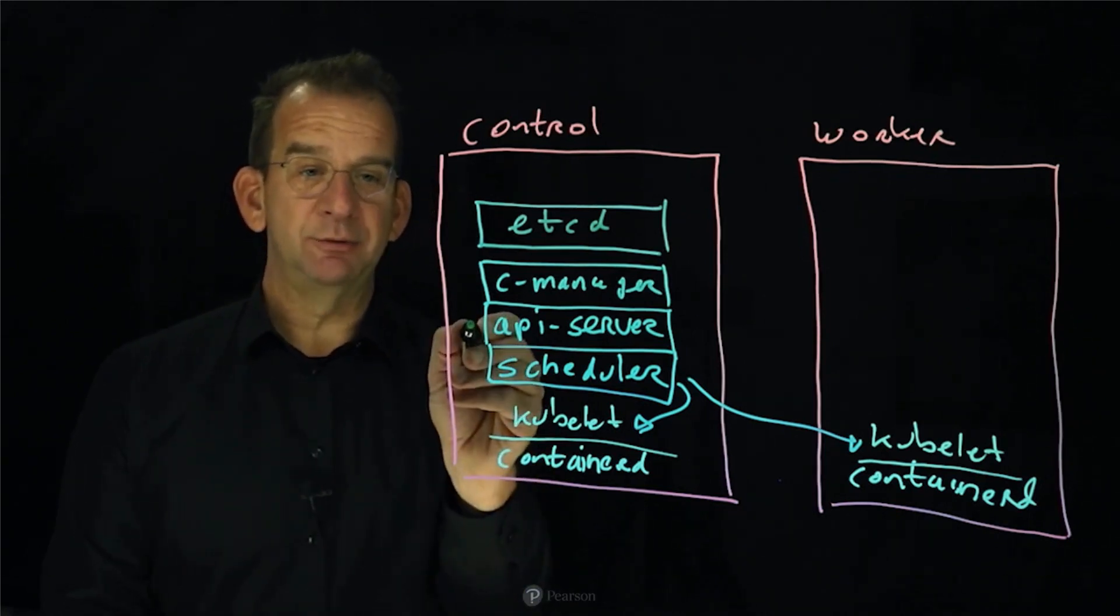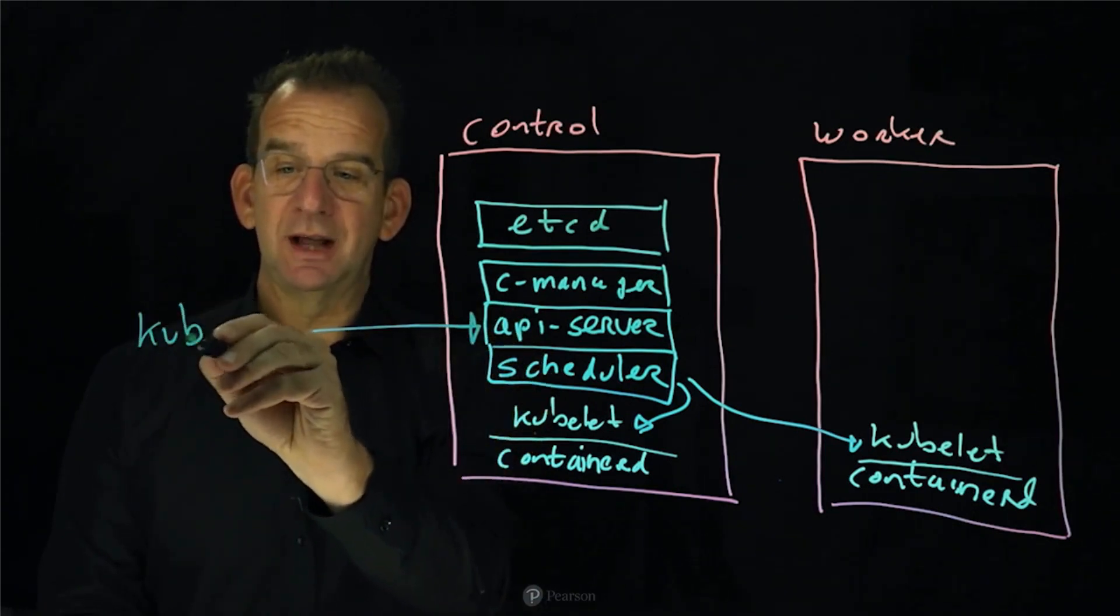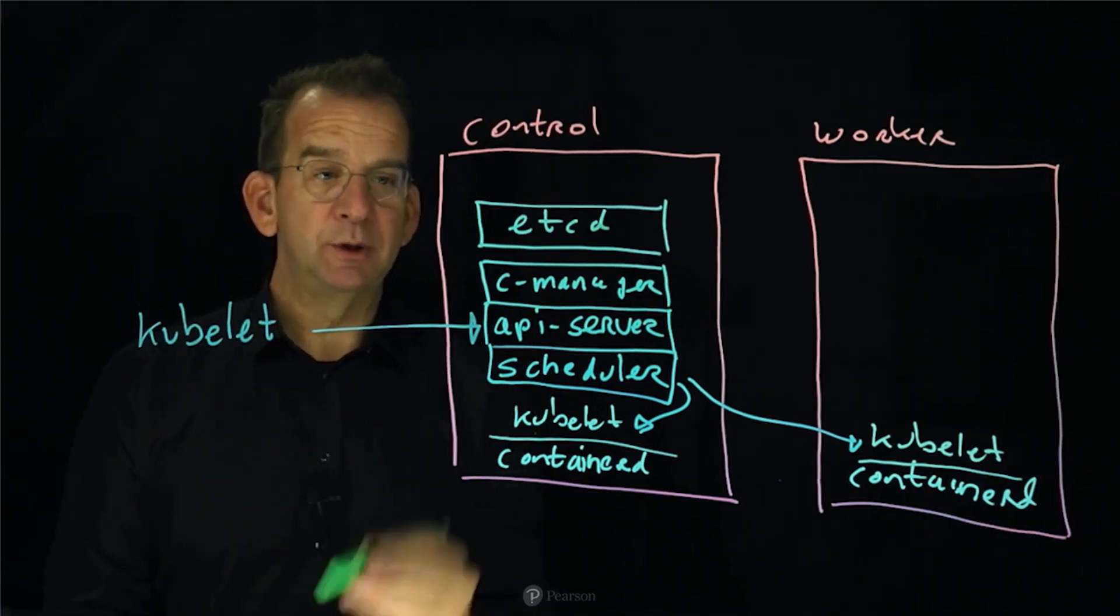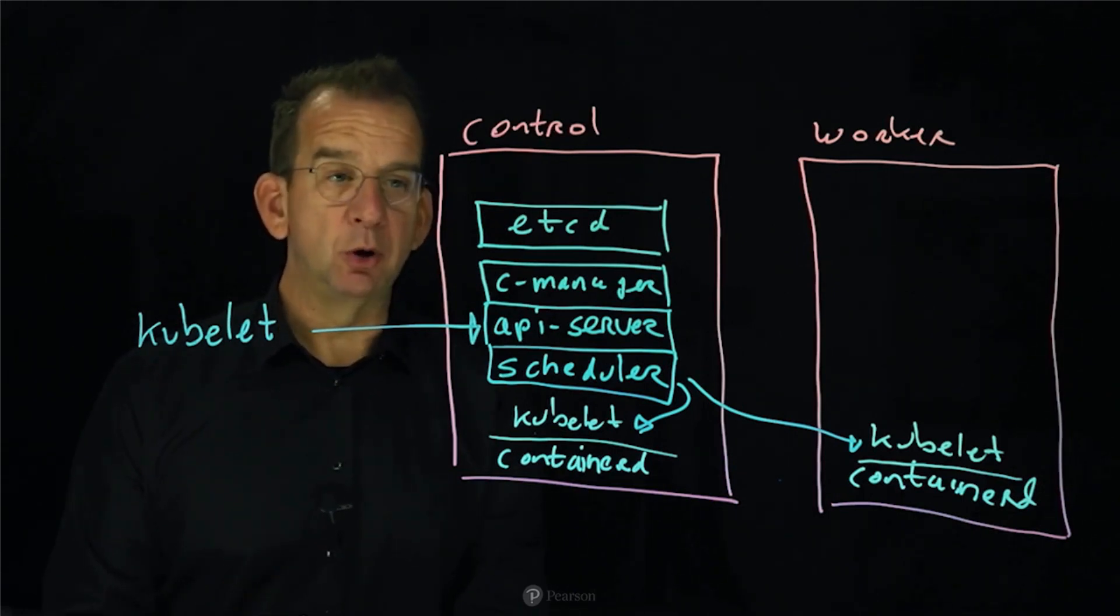And in order to interface with Kubernetes, you will use a client. And typically, that client will be kubectl. And kubectl is talking to the API server. So you use kubectl to run commands like kubectl run to run a pod.